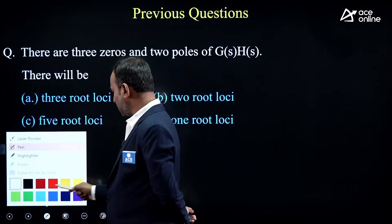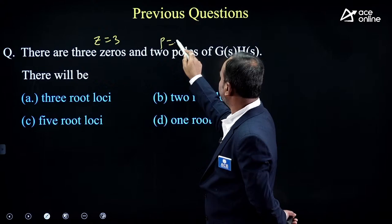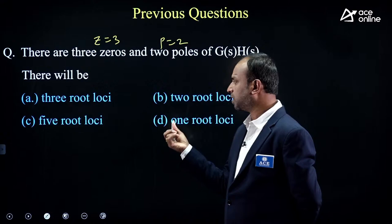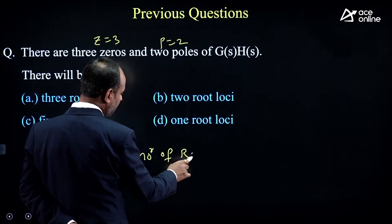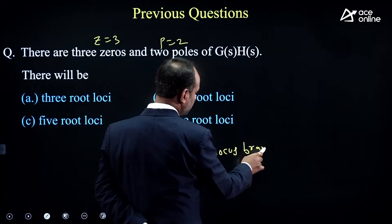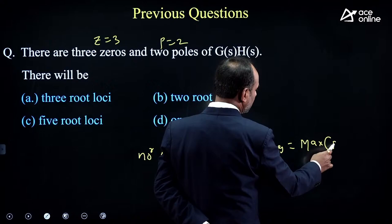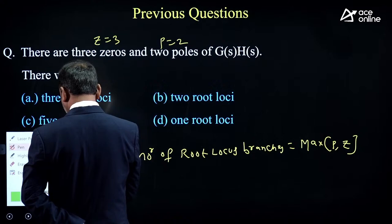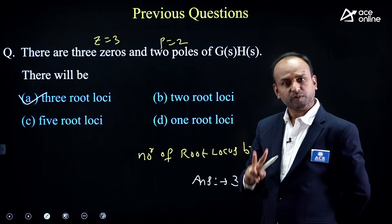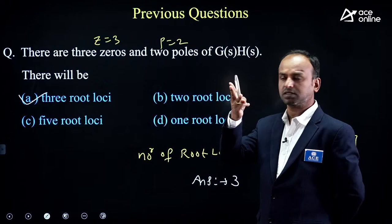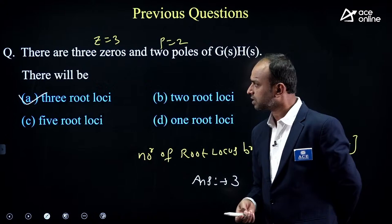Previous exam question: given 3 zeros and 2 poles. How many root locus branches? Formula: number of root locus branches = max(poles, zeros) = max(2, 3) = 3. Option A is correct answer. If both are equal, either value is correct.